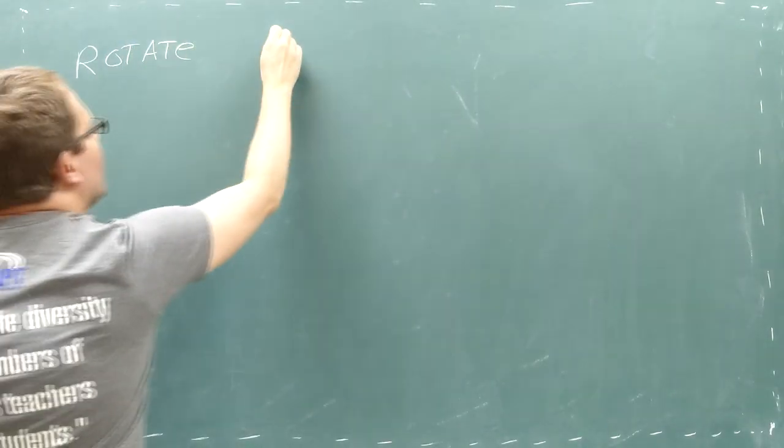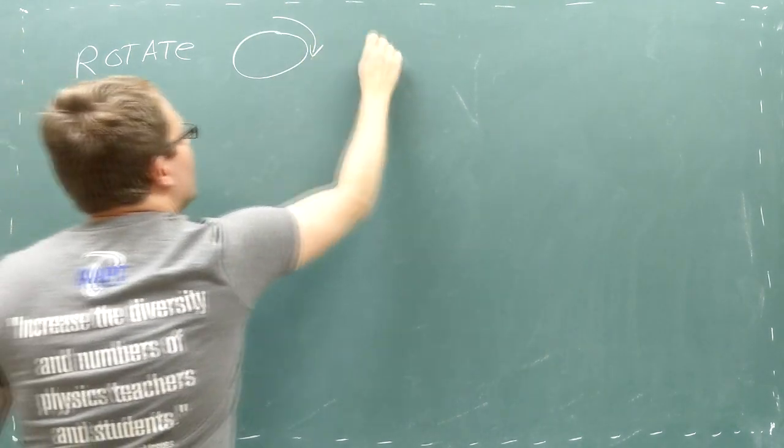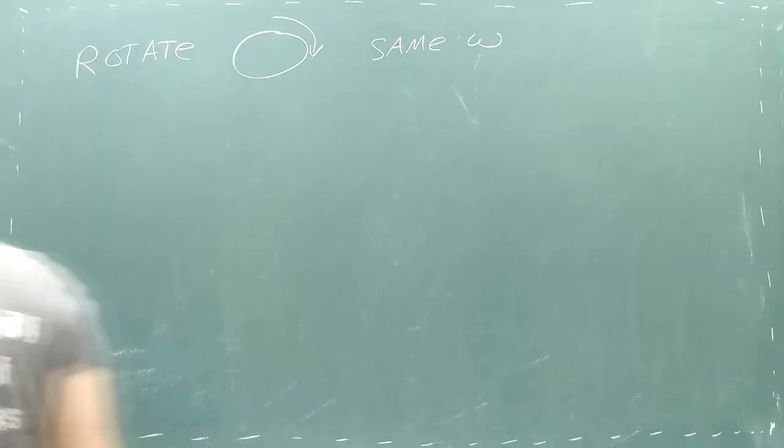When a shape rotates, all the particles in the shape move around the rotation axis at the same rotational velocity.